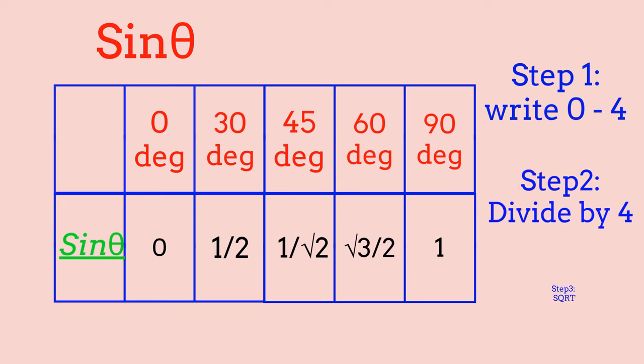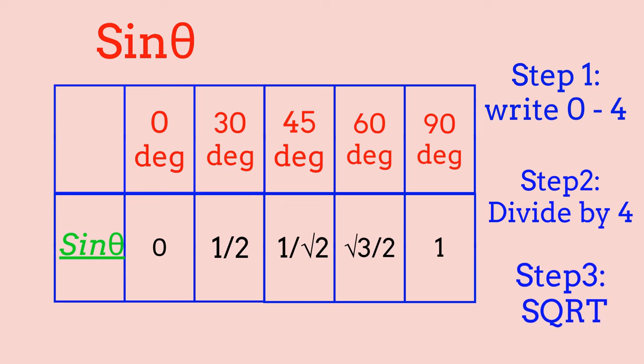After dividing by 4, we square root all the values. For sin 0, square rooting 0 over 4 gives 0. For sin 30, square rooting 1 over 4 gives 1/2. For sin 45, square rooting 2 over 4 gives 1 over square root of 2. For sin 60, square rooting 3 over 4 gives square root of 3 divided by 2. For sin 90, square rooting 4 over 4 gives 1. This is a simple way to get the trigonometry ratio for sin theta.